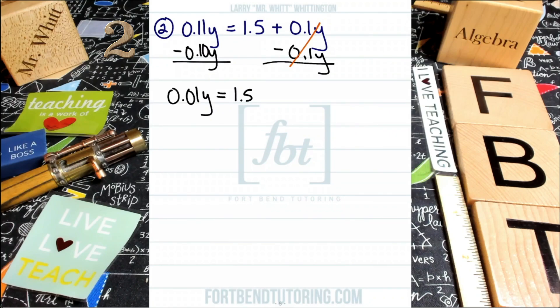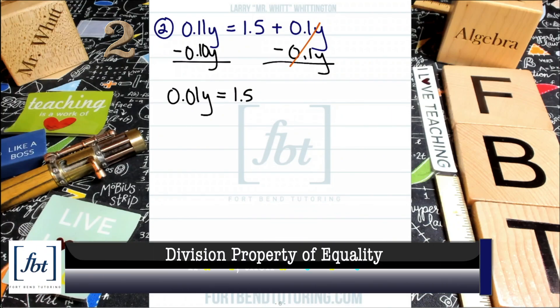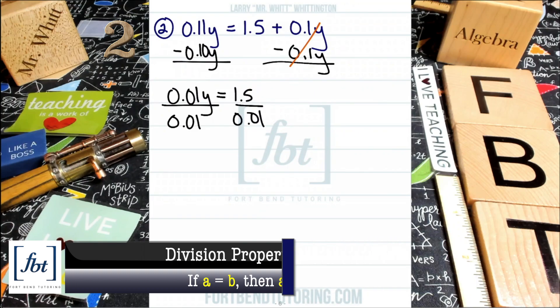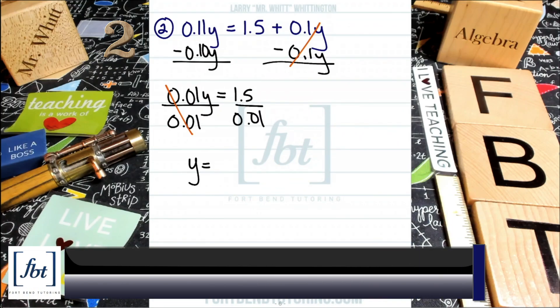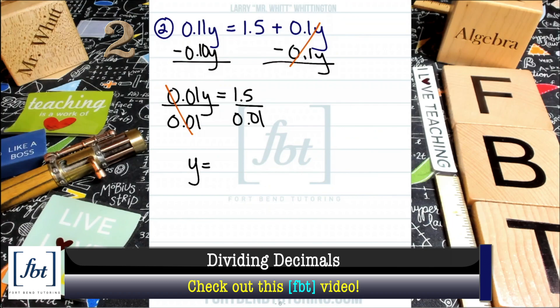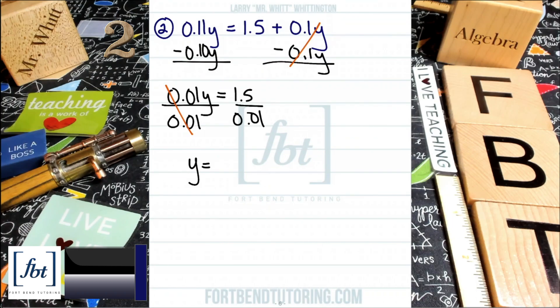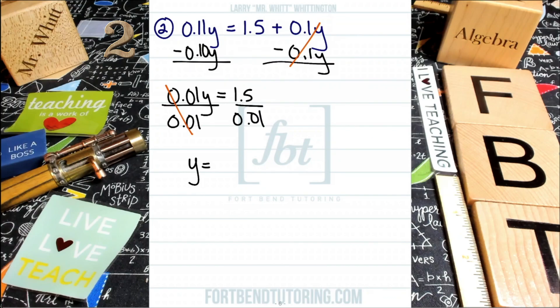So now we're going to use the division property of equality and you're going to divide both sides by this 0.01. Just like that. Left side, everything cancels out except for the variable Y. Bring down your Y and you're looking at a long division problem more than likely, right? Or you can multiply the numerator and the denominator by a hundred. I think I want to do that. Let's do this. Let's multiply the numerator and the denominator by a hundred. Why am I doing that? Because the smallest place value in this fraction is the hundredths place.